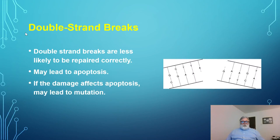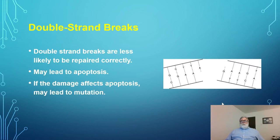Double-strand breaks are much more difficult to repair. It's entirely possible that one end of the broken strand may combine with a completely different chromosome to produce a chromosomal aberration. In some cases, enzymes are able to detect that this break is taking place and may signal the cell to undergo apoptosis. But if that doesn't happen — for example, if the enzymes that cause apoptosis have been damaged — this may lead to mutation and perhaps carcinogenesis.